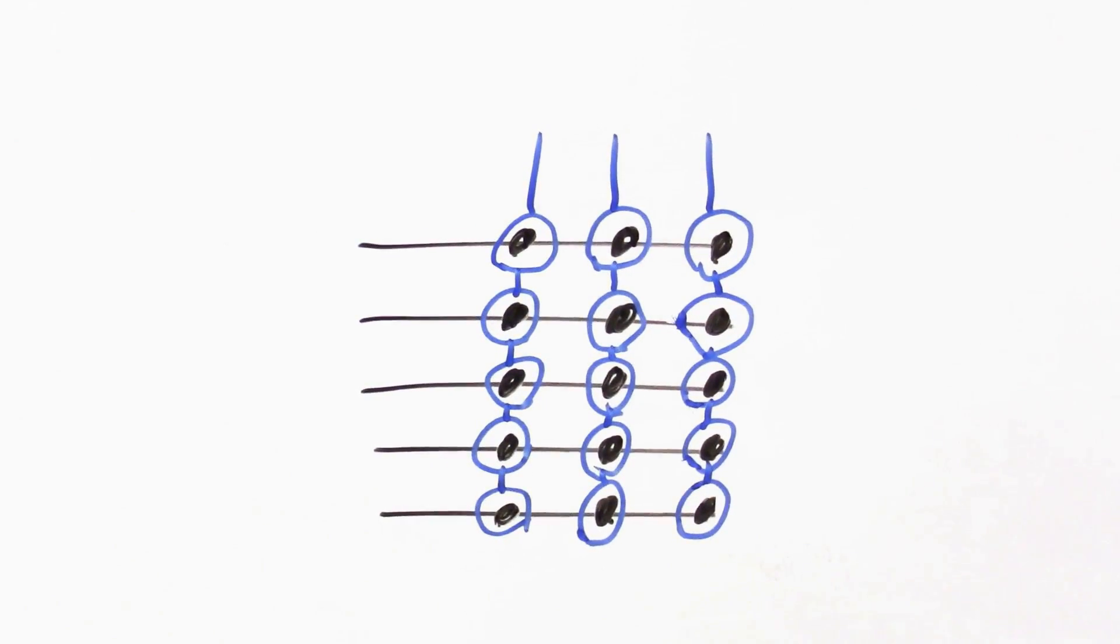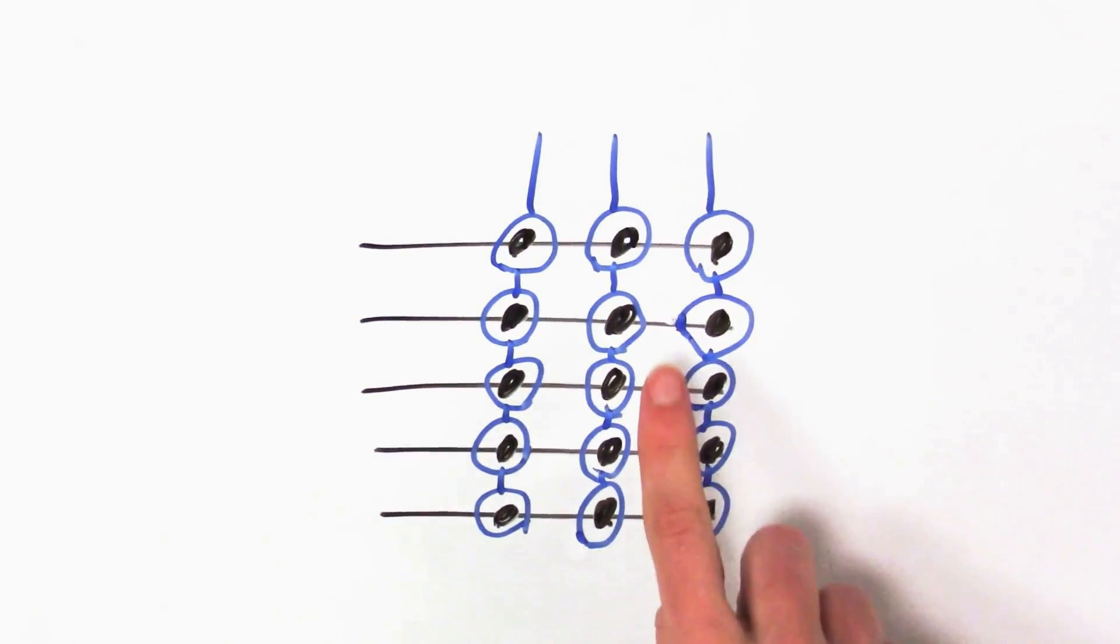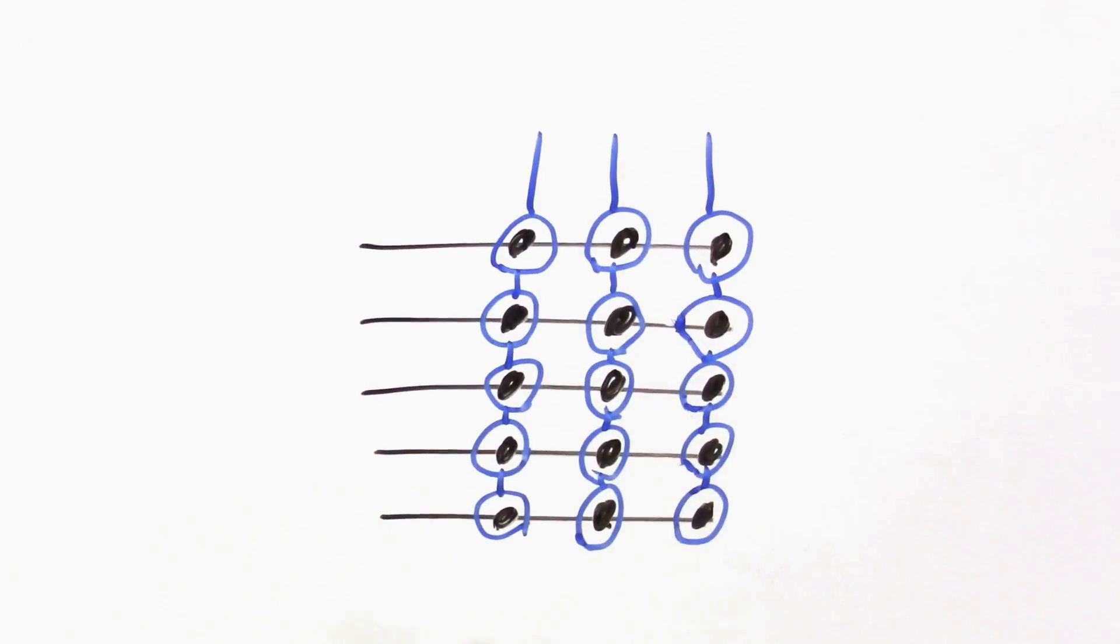So, a two-dimensional touchscreen is made up of a bunch of rows and columns of these electrodes, and it figures out where your finger is in two dimensions by just looking at all the electrodes together and seeing which ones are being touched.